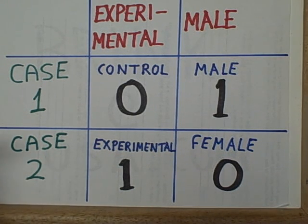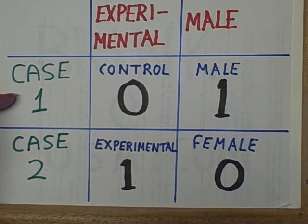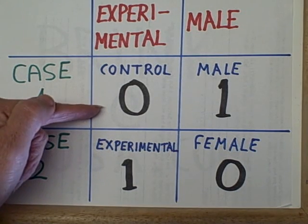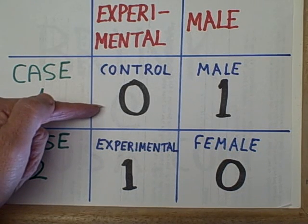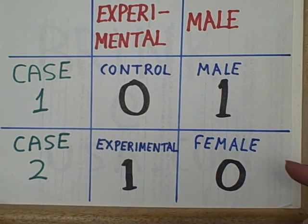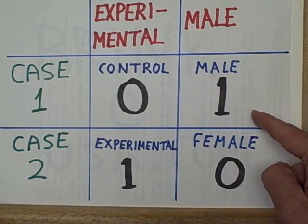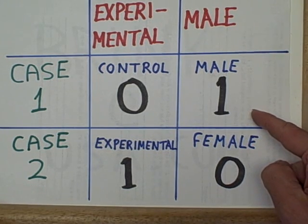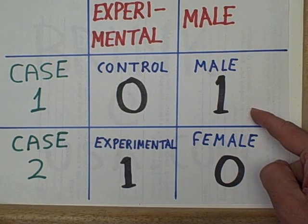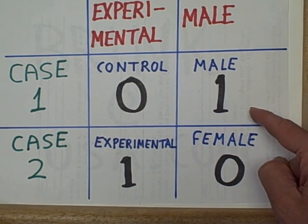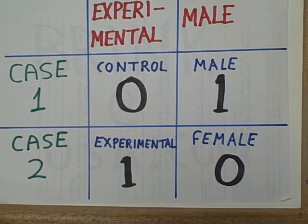So let's now enter the data for our first subject, case number 1. This first subject was assigned to the control group so we enter a 0 for this cell. Then we hit the right arrow key to enter the data and move over into our next cell. We see that our first subject was a male, and therefore let's type in the 1 to indicate that our first case was a male. We hit the enter key or an arrow button to make sure the data are entered.